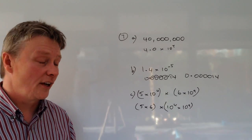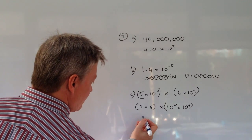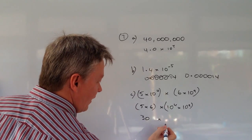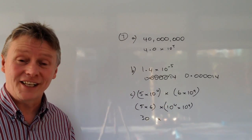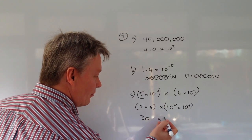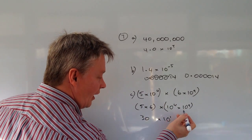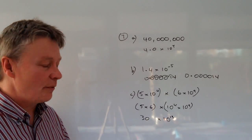So I've separated those out. 5 times 6 is going to be 30. And 10 to the power of 4 times 10 to the power of 9. Well, if you remember your indices laws you add the indices together so that becomes 10 to the power of 13.